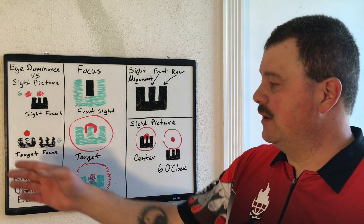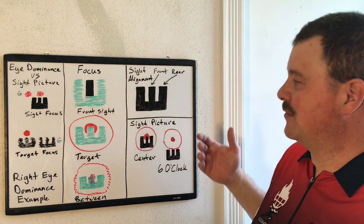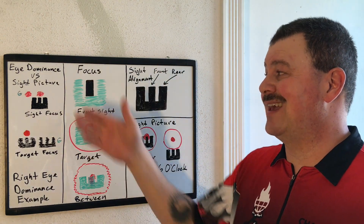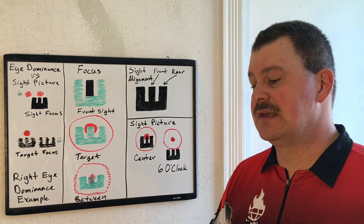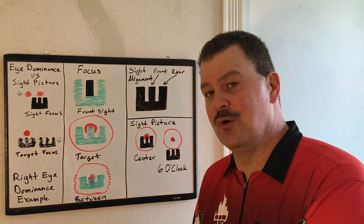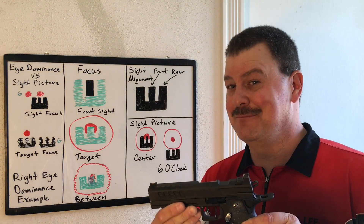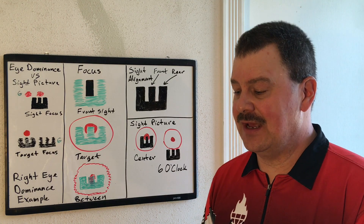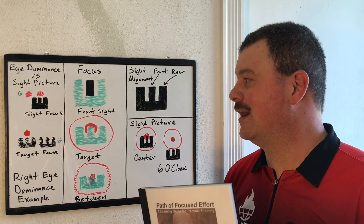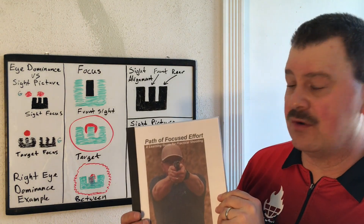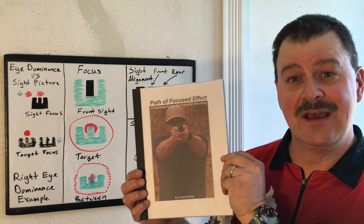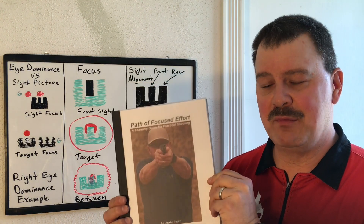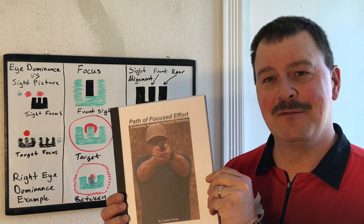Hopefully these examples of different sight alignments, sight pictures, different focus levels, and eye dominance will help you shoot your Atlas Gunworks guns better. If you want more information, I talk about this topic in great detail in my book, Path of Focused Effort. You can go to bigpandaperformance.com, order the book, have fun, and be safe.